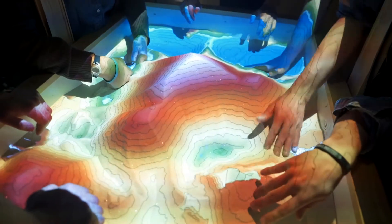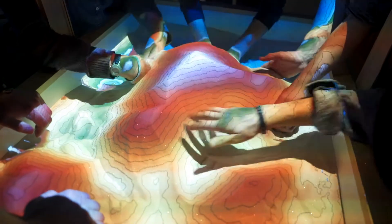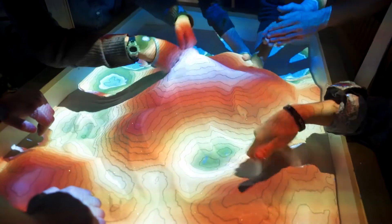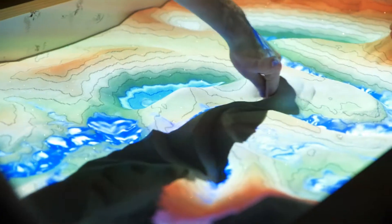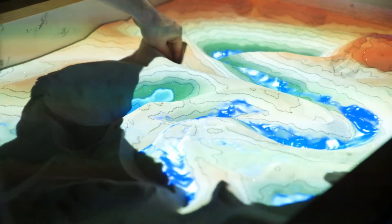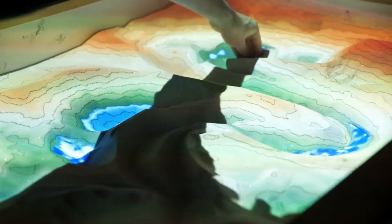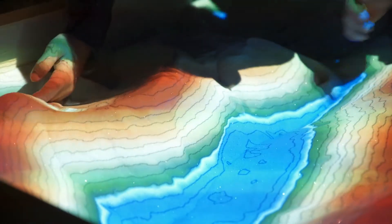As the students manipulate the sand, the Xbox Kinect radar is constantly scanning the sand. Every time it picks up those changes, it's relaying that information into the computer, and the computer projects it in that false color image related to topography.